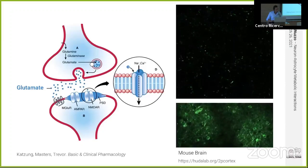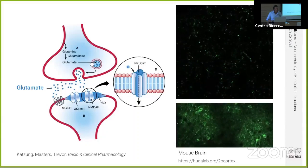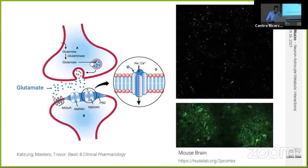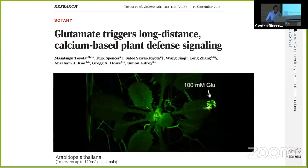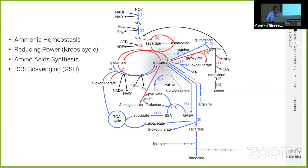Neurons communicate with each other using glutamate. Glutamate is the main neurotransmitter of the brain — it is released at the synapses and binds to receptors located on neuronal membranes, but not only on neuronal membranes. These same receptors exist in plants; glutamate receptors existed well before the separation between animals and plants.